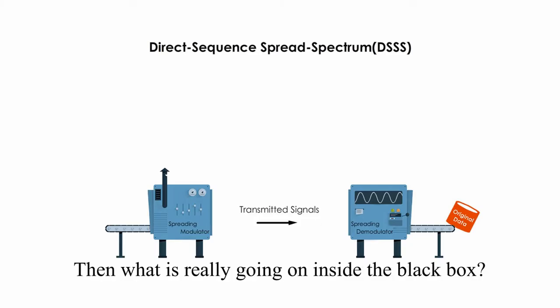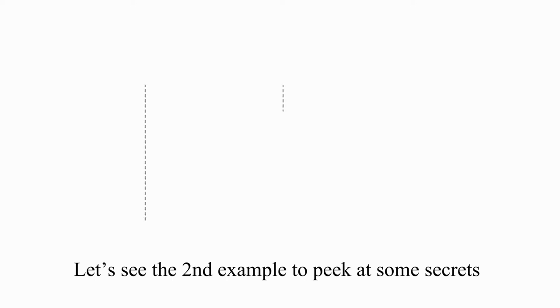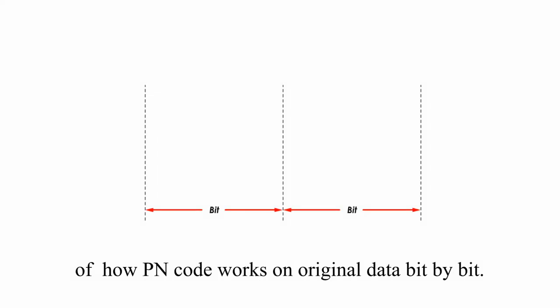Then, what's really going on inside the black box modulator or demodulator? Let's see the second example to peek at some secrets, not all secrets, how PN code works on original data, bit by bit.